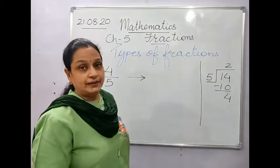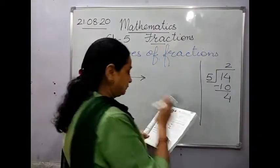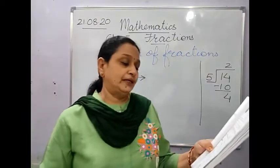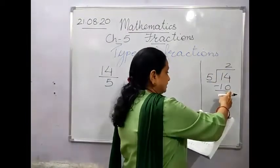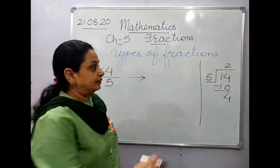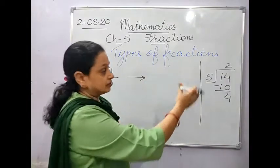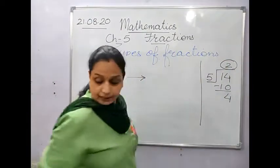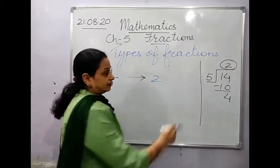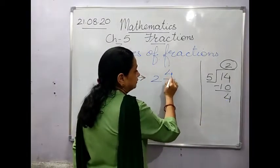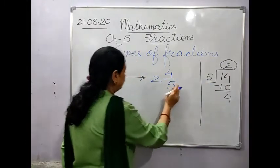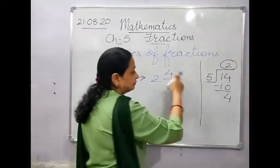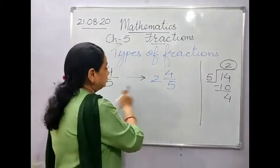Once you have solved the division, the quotient becomes your whole number, the remainder becomes the numerator, and the divisor becomes the denominator — which remains the same. So 14/5 as a mixed fraction is 2 and 4/5. The denominator remains the same throughout this conversion.